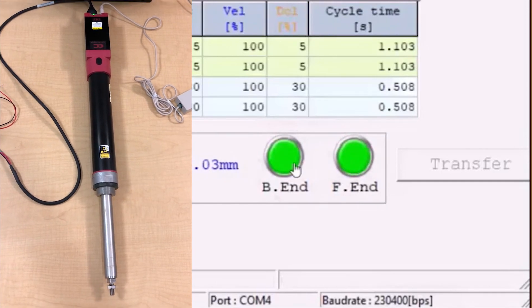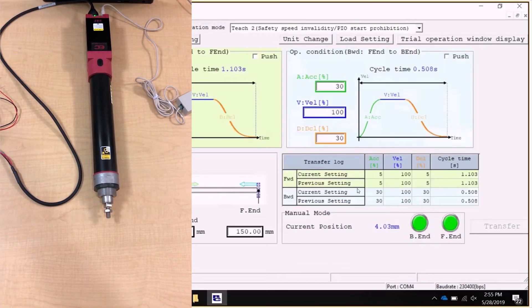Now we can click the buttons F End and B End to tell the actuator which position to go to.